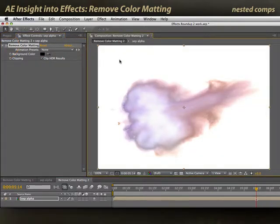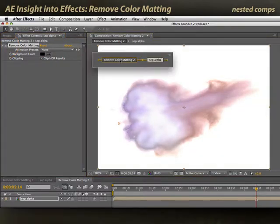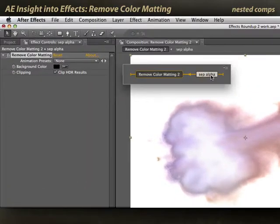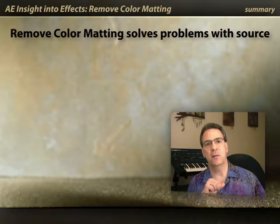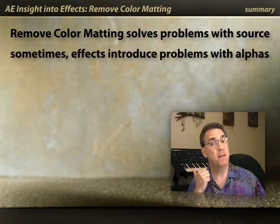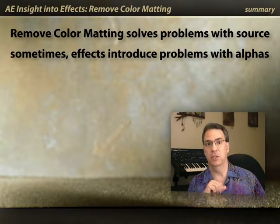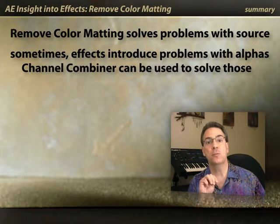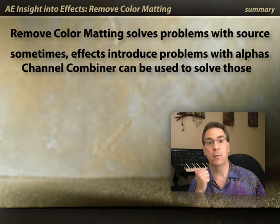I'm running After Effects CS4, so I'll tap the Shift key to bring up the mini flowchart. You'll see that my little stack of the two channels with a separate alpha goes into this Remove Color Matting comp — and that's where I'm applying my effect. Now, Remove Color Matting is good for solving problems with your source, but sometimes effects can introduce problems with the alpha channel. To learn how to solve those, go watch the third movie on Channel Combiner. We'll talk more about premultiplied and straight alphas.